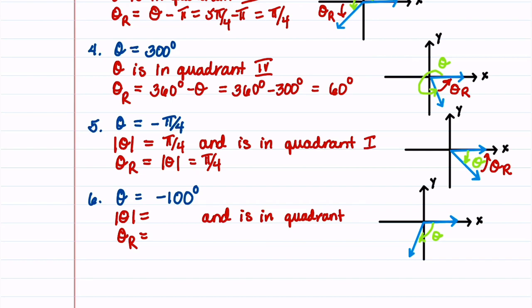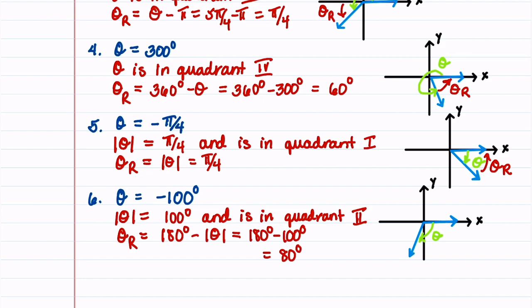Our last problem: theta is equal to minus 100 degrees, so the absolute value of theta is 100 degrees. And 100 degrees is in quadrant 2, so theta sub r is 180 degrees minus the absolute value of theta, which is 180 degrees minus 100 degrees, equal to 80 degrees. That's our reference angle, and we can notate that angle on our graph.